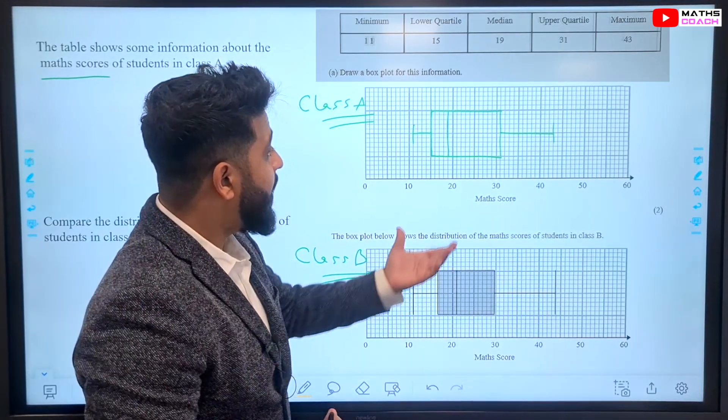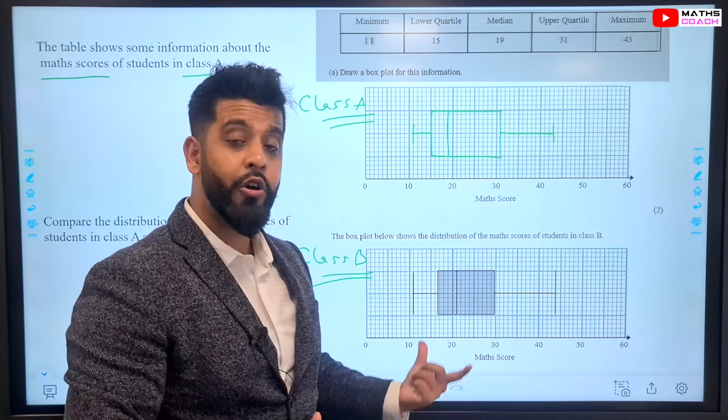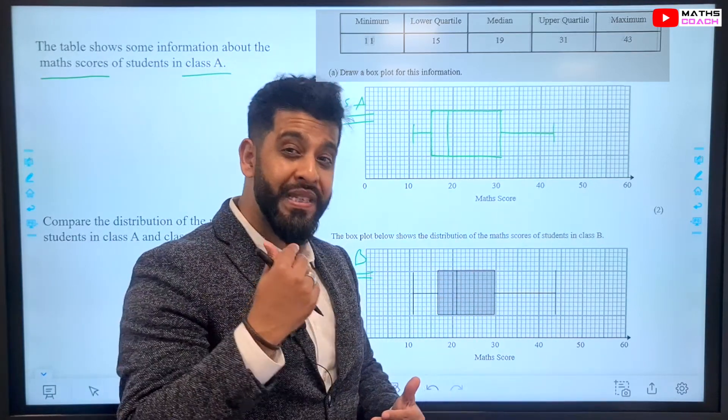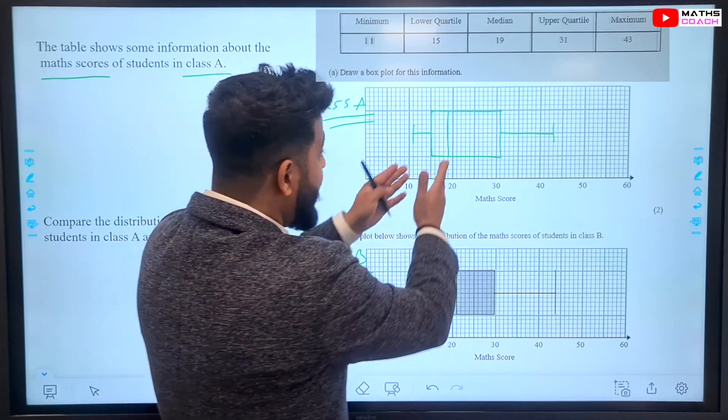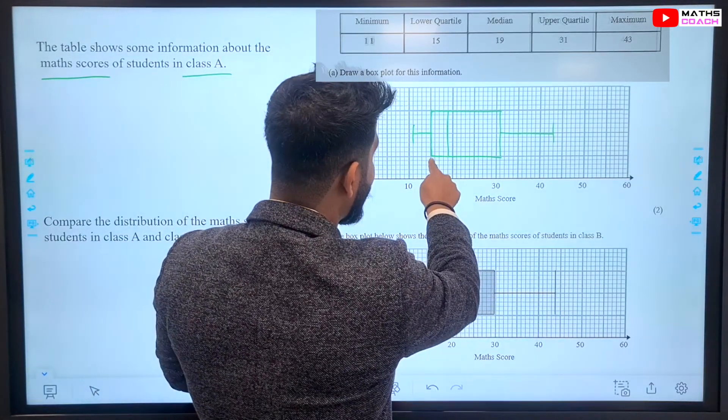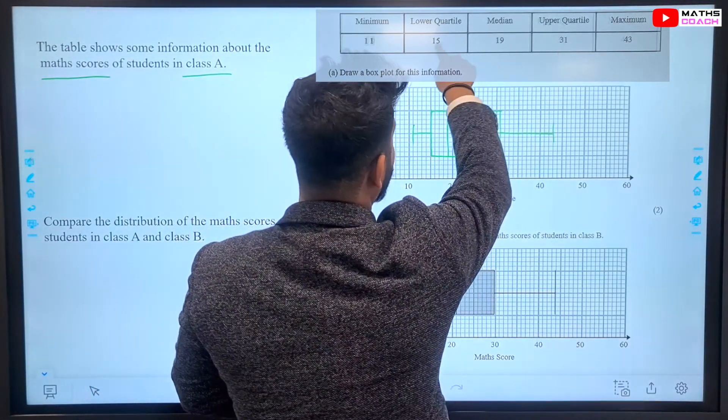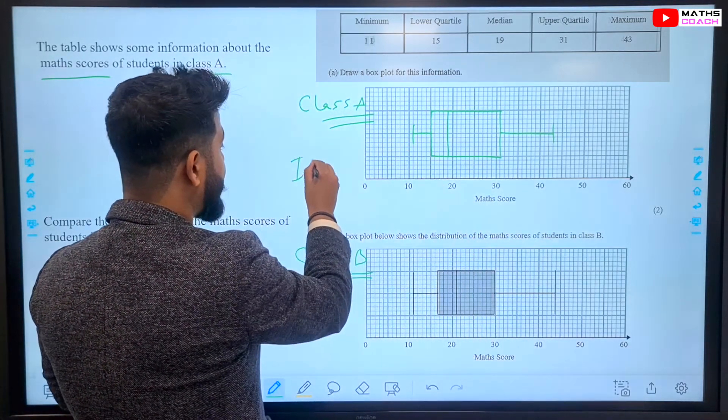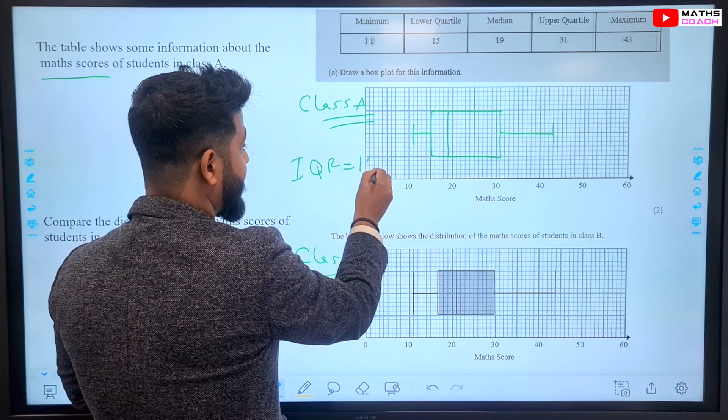Now, I did make a mention that the interquartile range are more or less the same. However, if you notice, if you are going to be specific, and you've got the data in front of you, the interquartile range of this is going to be 31, take away 15, which is 16. So, their IQR is 16.